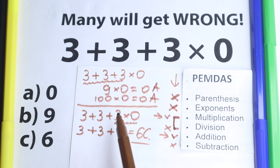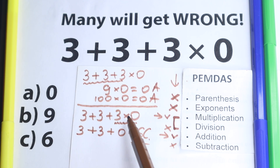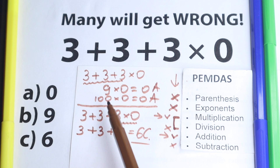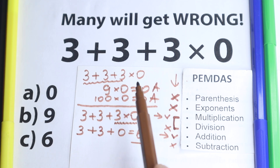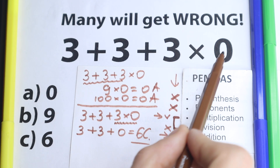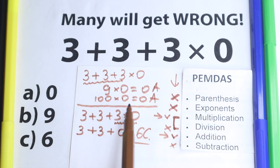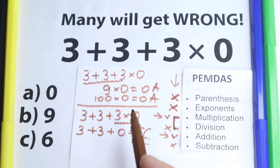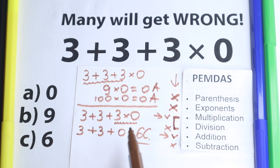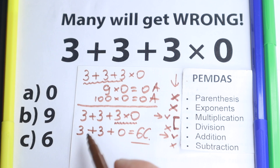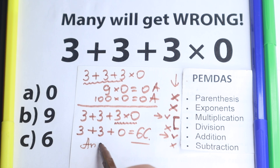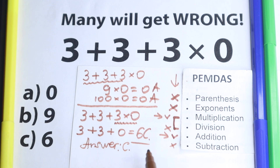I understand why students make this mistake — it's obvious to multiply by 0 and get 0. But this is also a very bad mistake, because you need to know about order of operations. So our answer is option C.